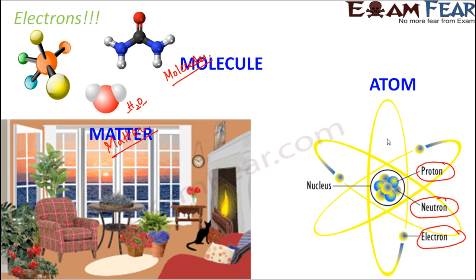When you look at the structure of an atom, you see that there is a central core which is positively charged, and this central core of the atom is called the nucleus. The nucleus contains two types of particles — proton and neutron. Protons are positively charged particles and neutrons are neutral. Therefore, the net charge of the nucleus is positive. Whereas electrons are negatively charged particles and they revolve in orbits. The electrons are not present inside the nucleus; they are present outside the nucleus and keep moving around it — the way different planets revolve around the sun.